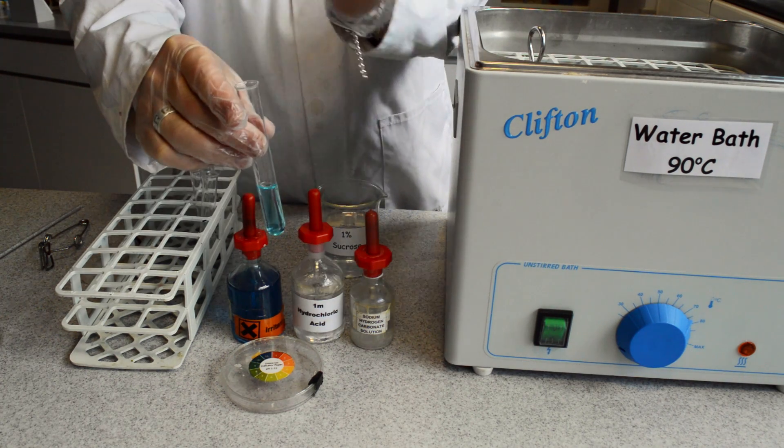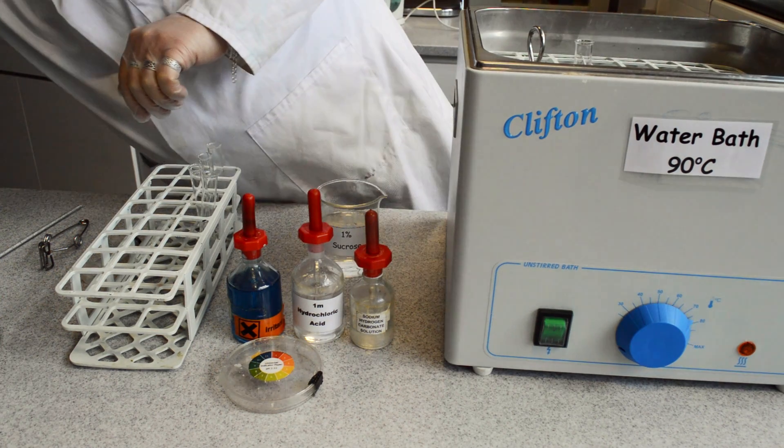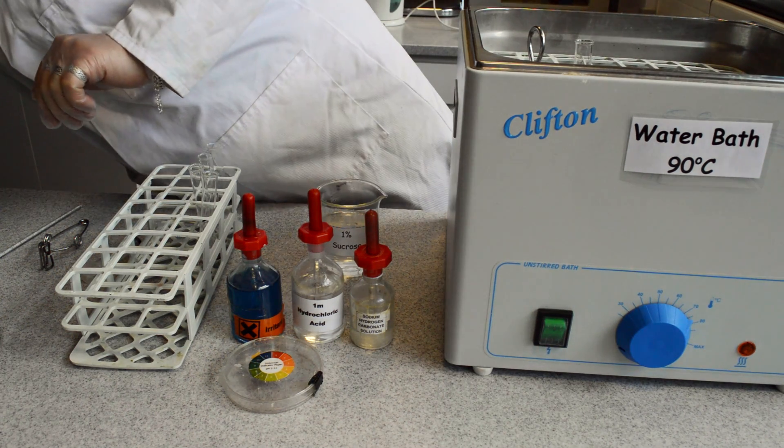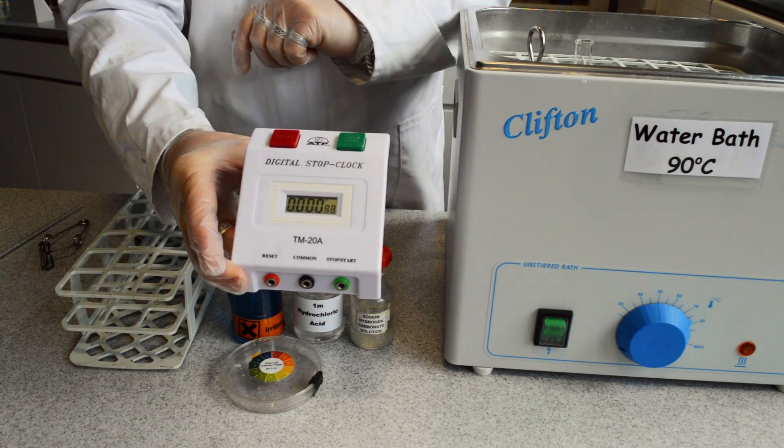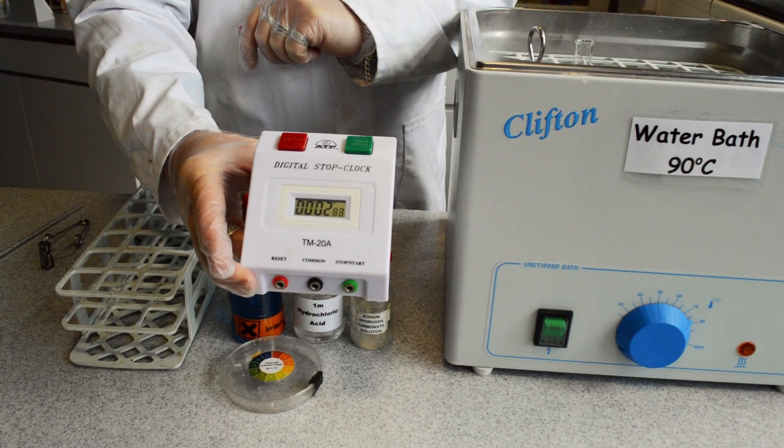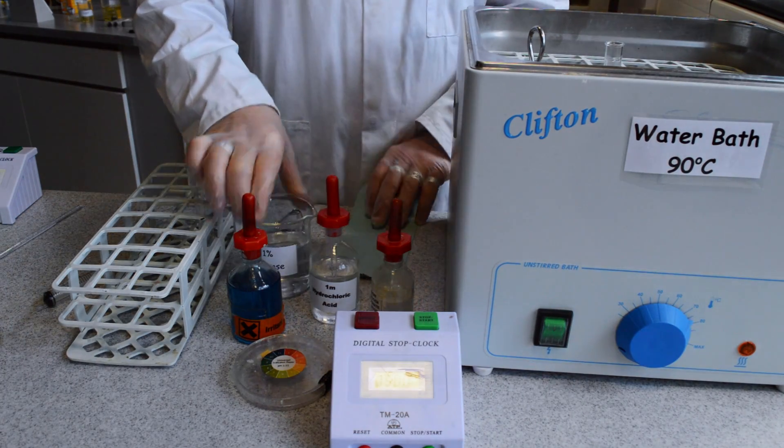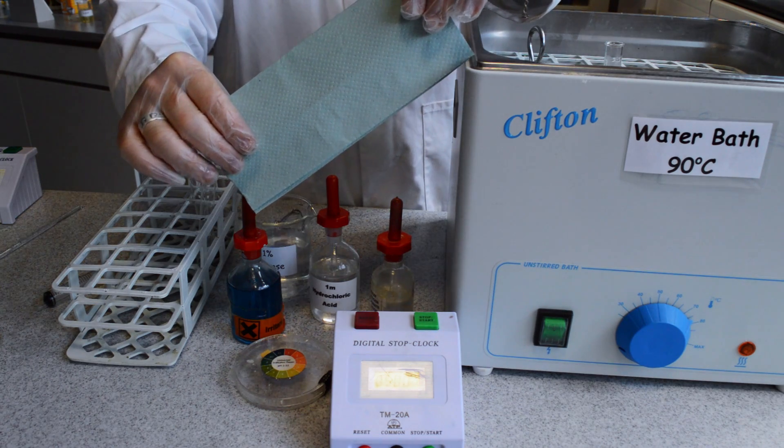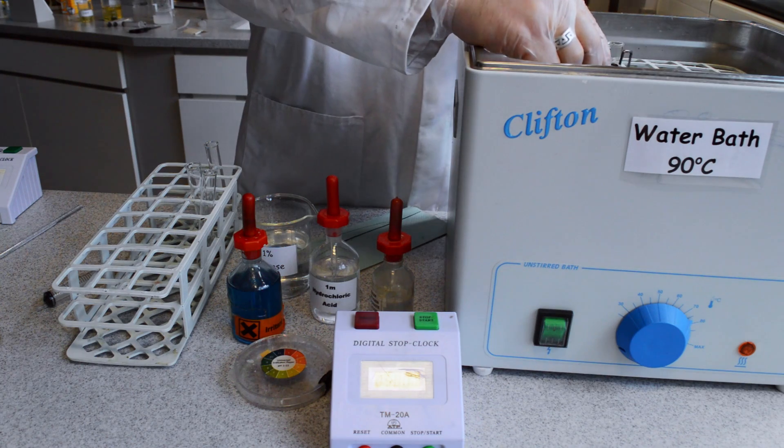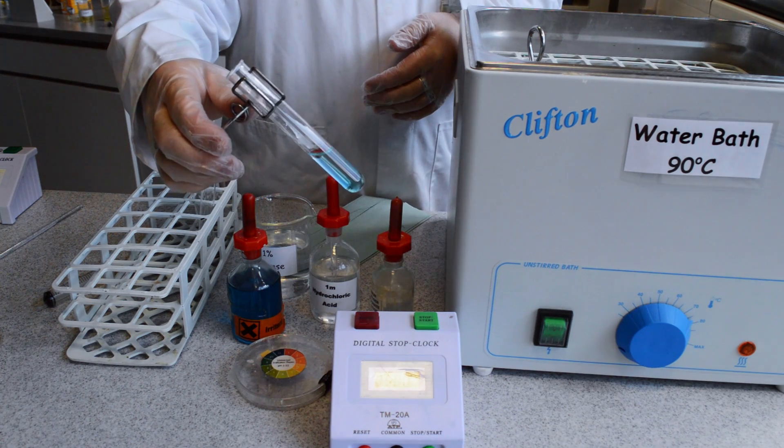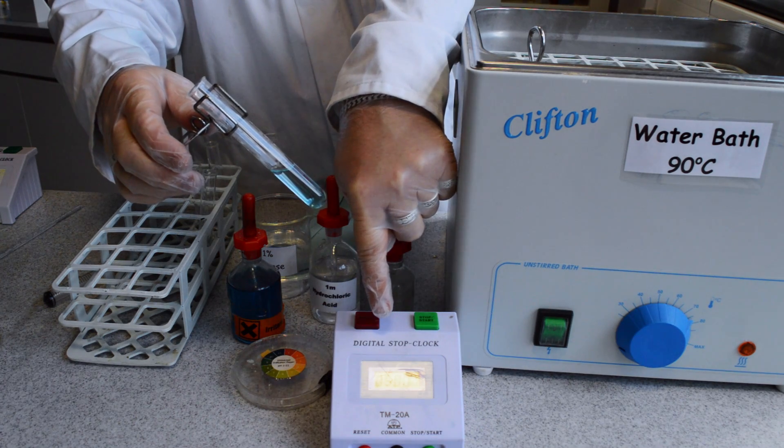Then place this sample into a water bath at 90 degrees centigrade for approximately 5 minutes. After 5 minutes has elapsed, remove the sample from the water bath using a paper towel or test tube holders as it will be hot. You will notice that the Benedict's reagent in the presence of sucrose will not give a colour change.